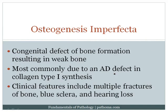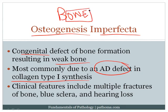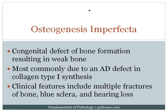The next disorder is osteogenesis imperfecta — imperfect formation of bone. It is a congenital defect of bone formation resulting in weak bone. It is most commonly due to an autosomal dominant defect in type 1 collagen. Type 1 collagen is the collagen present in bone. Without type 1 collagen, the bone will be very weak and will fracture.